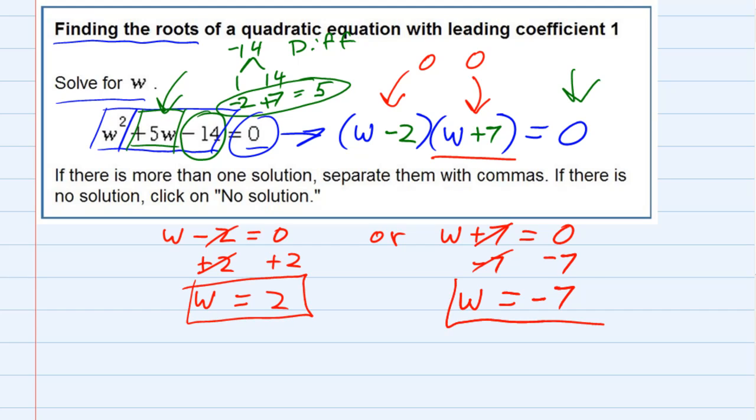w equals 2, w equals negative 7. We were told if we have multiple solutions to separate them by commas, so I would say negative 7 comma 2, or 2 comma negative 7 - it doesn't matter which order we put those in.